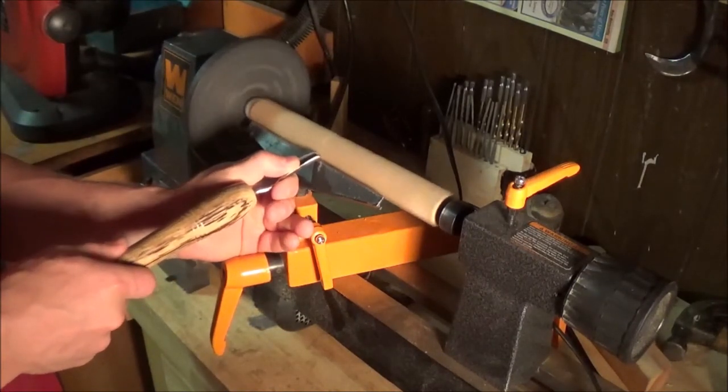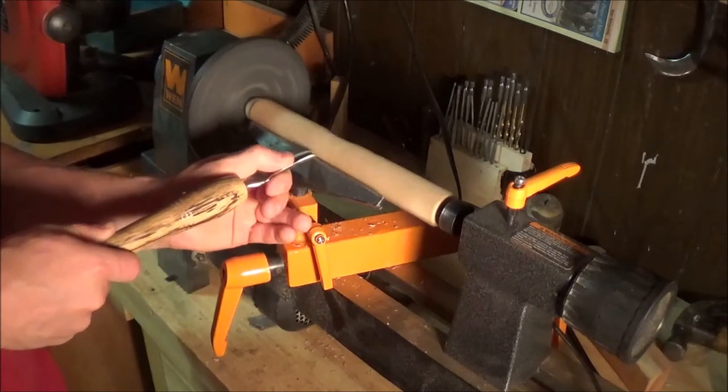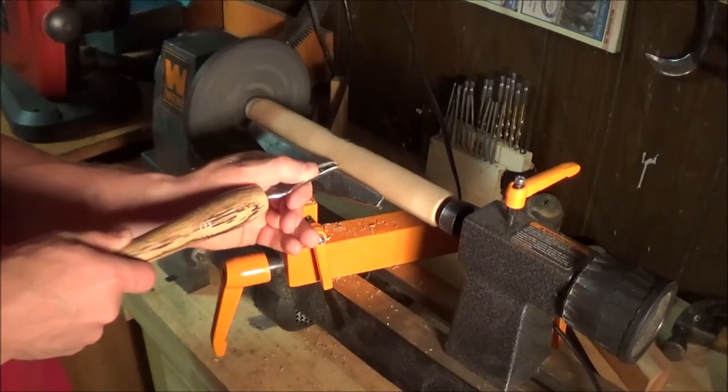Now the first step in this process is to turn this piece of square stock into round stock, which is the most labor-intensive step, and then we'll just make it look like a snake.